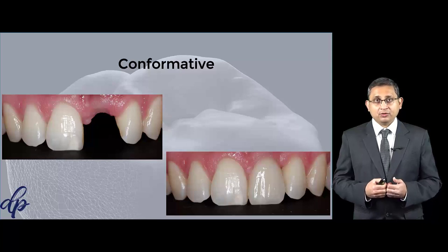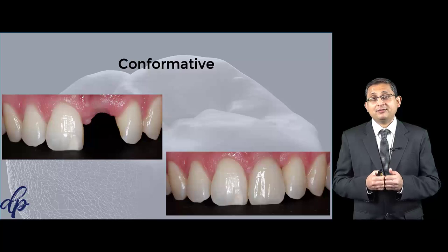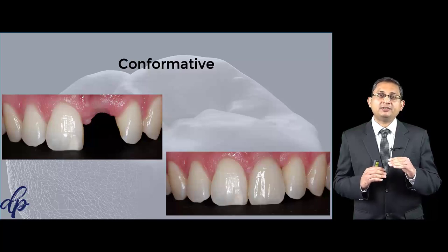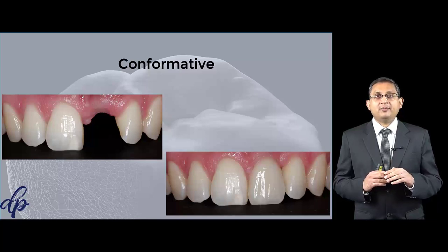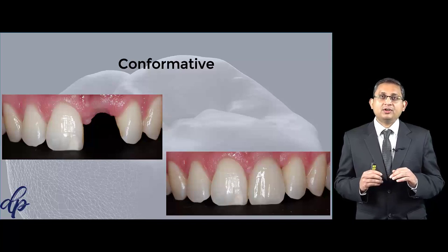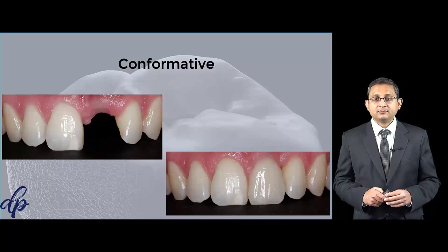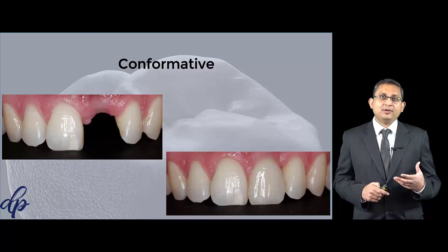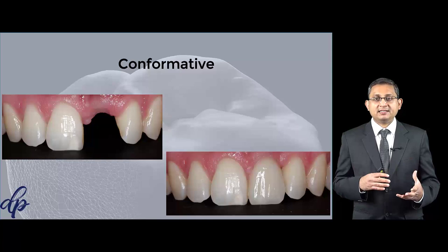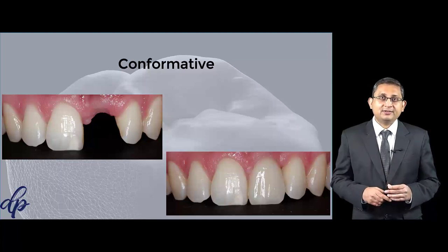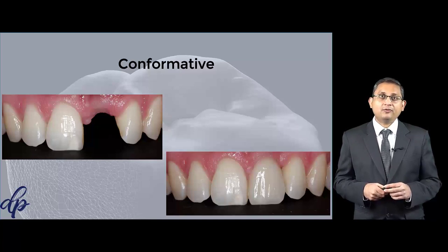Make sure the TMJ issue has been resolved before you do any reorganized approach. Even if I am doing anything reorganized, I try to keep everything to the minimum — I will not increase the OVD too much, and I will do minimal restorations to stay within the adaptive capability of the patient. If you're doing re-restoration of anterior teeth with stable posterior teeth, such as three-to-three veneers on the upper anterior, you can conform to the patient's original occlusion.